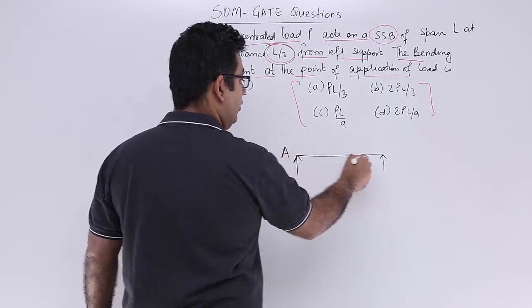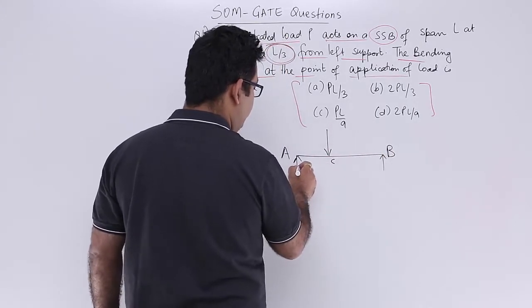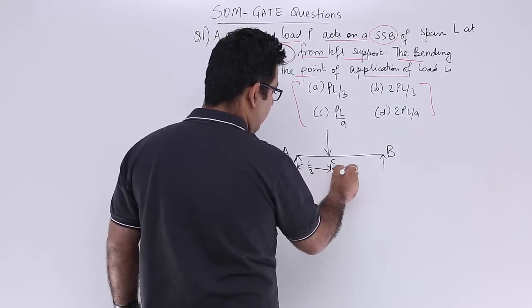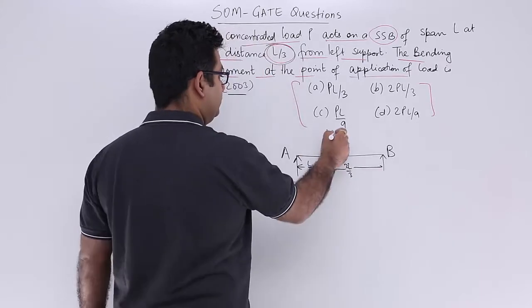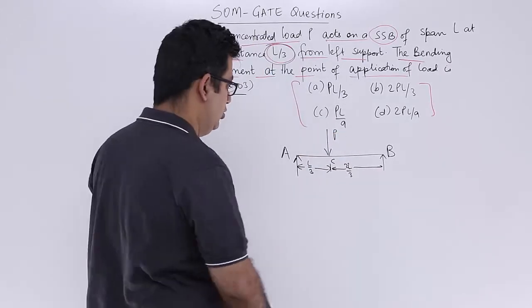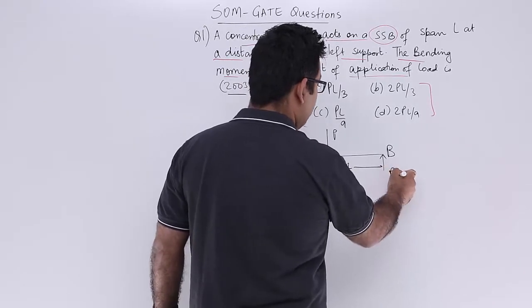So this is left support, so you have a load over here at point C which is L by 3 from the left support. So this becomes 2L by 3, load is P. So these are the two support reactions RA and RB.